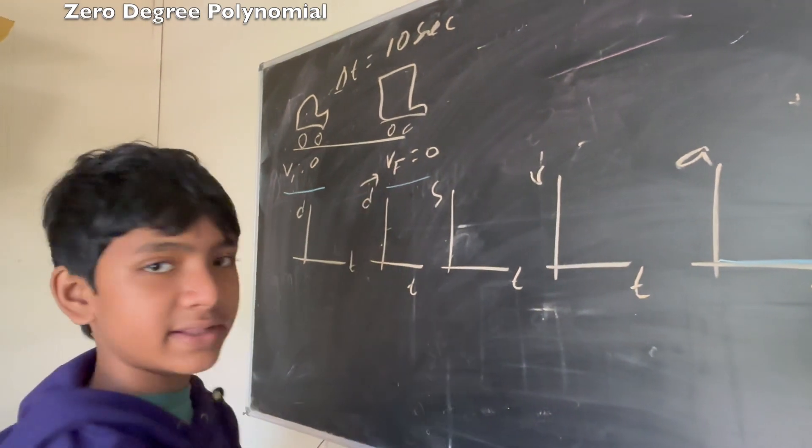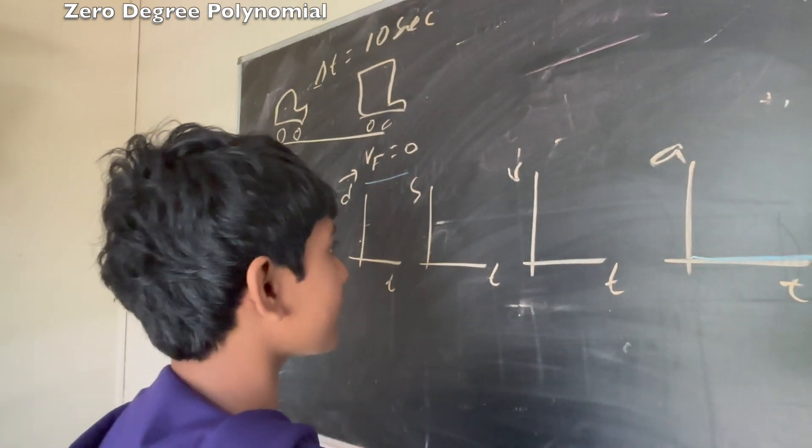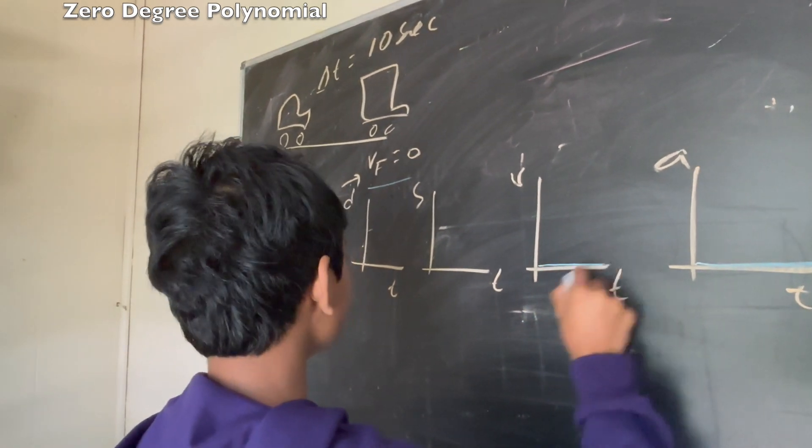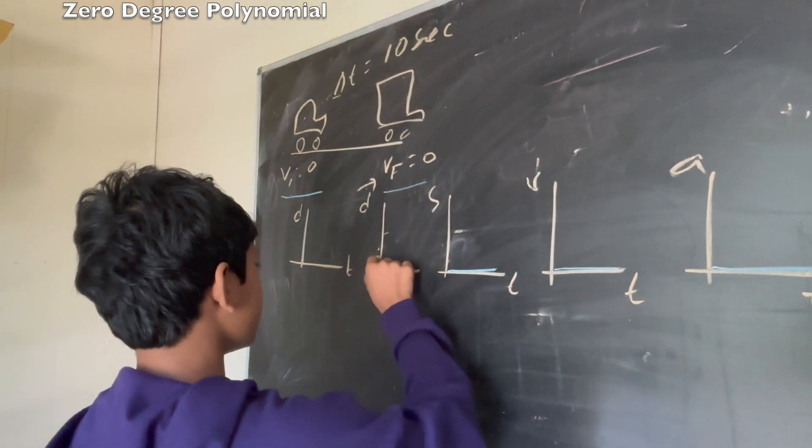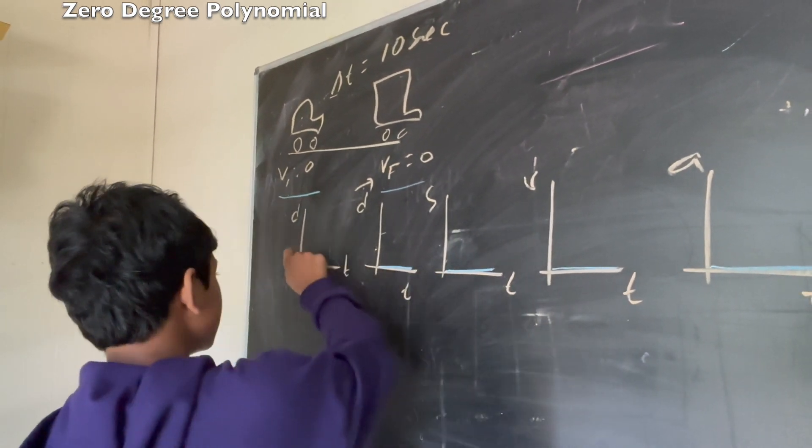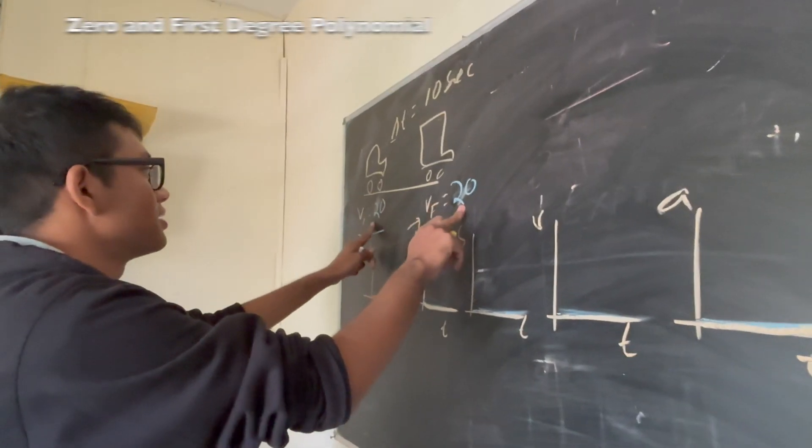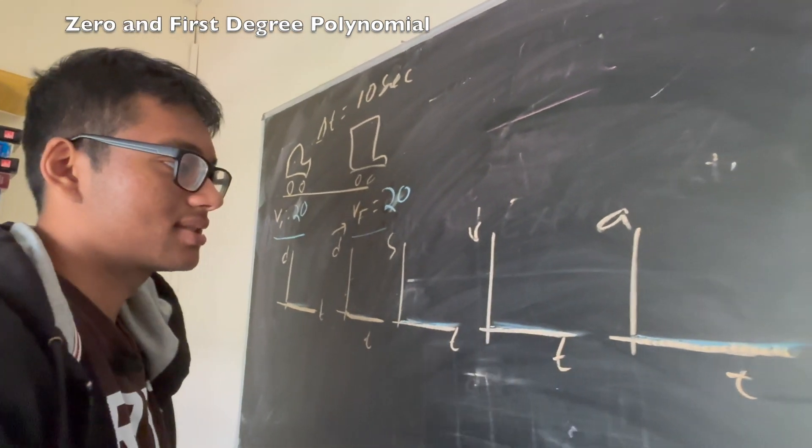Since it literally didn't accelerate, the velocity just stayed the same. Since the acceleration is constant, that means the velocity is also always 0, the speed is also always 0, the displacement is also always 0, and the distance is also always 0.